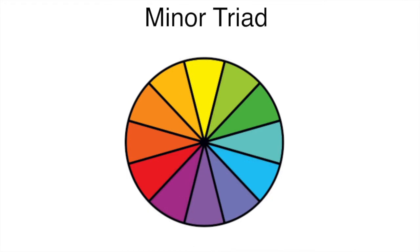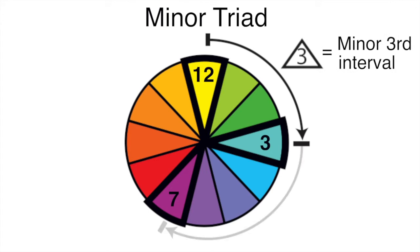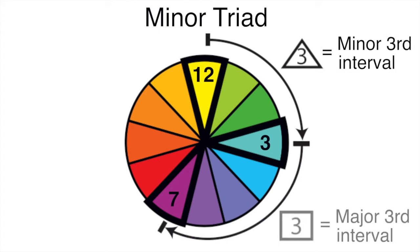A minor triad is a minor third interval followed by a major third interval.